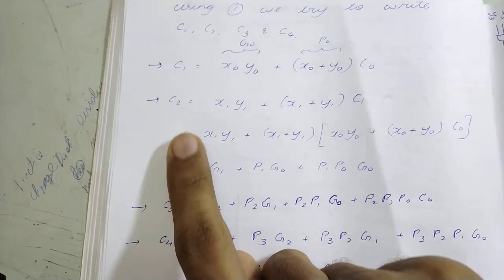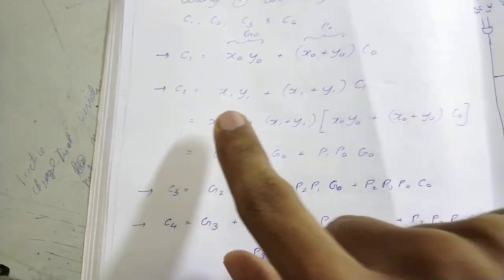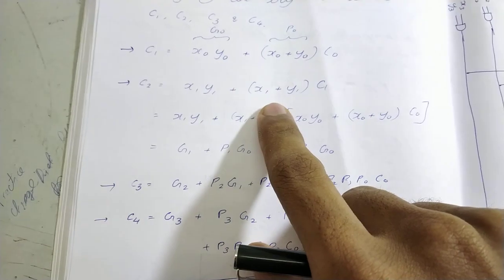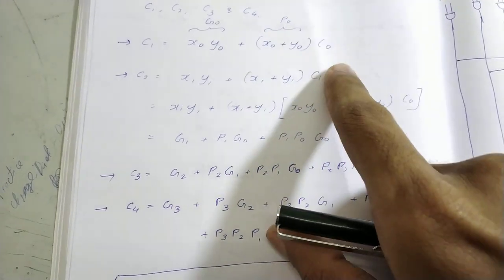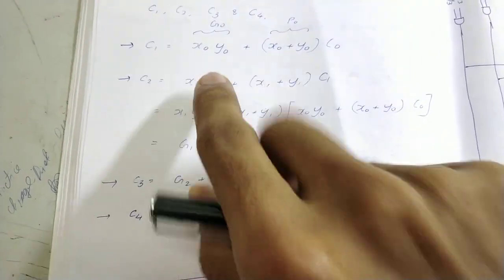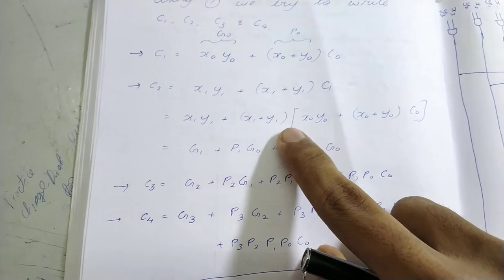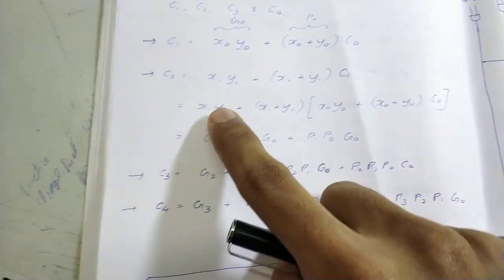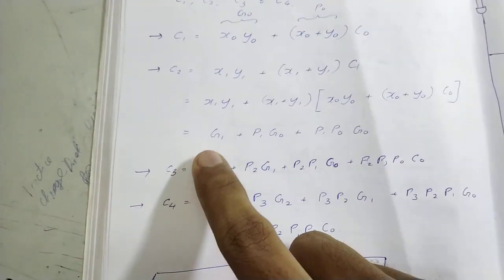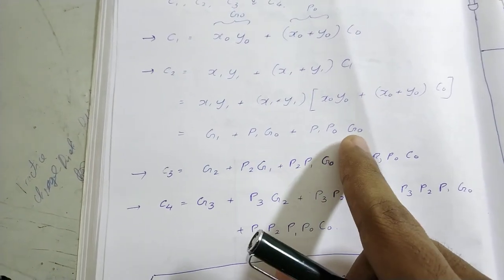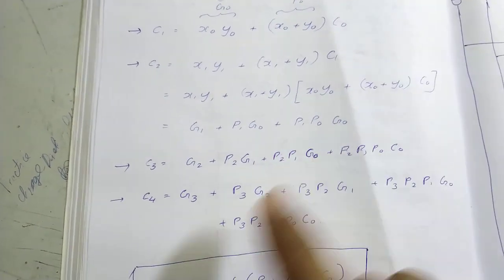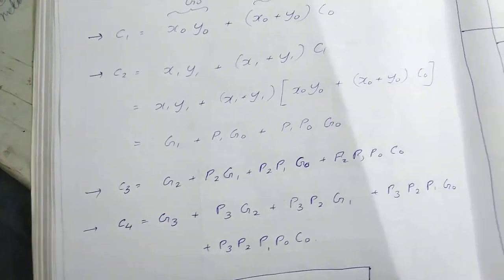Now we write it for c2. For c2 also we write the same equation. Now instead of c1 we substitute whatever is here. So what do we get? g1 plus p1 g0 plus p1 p0 c0.